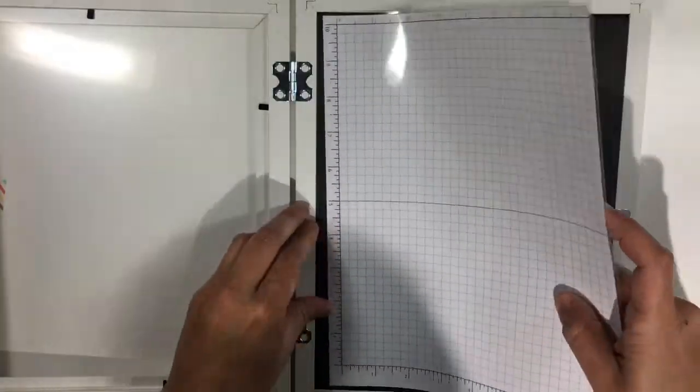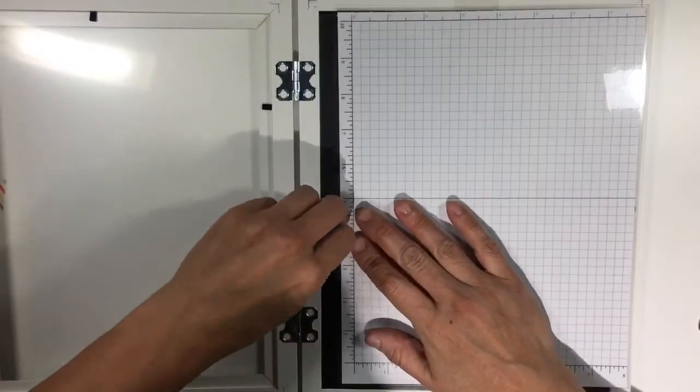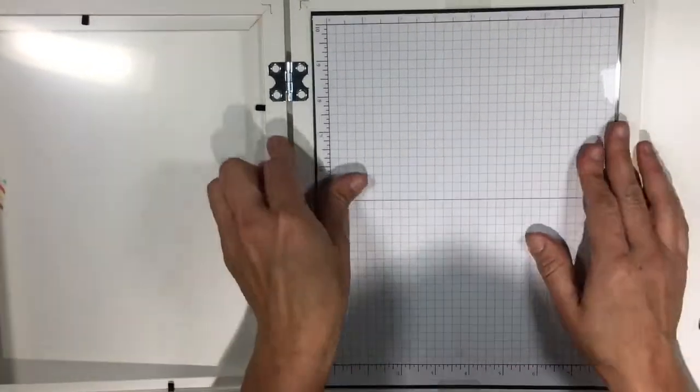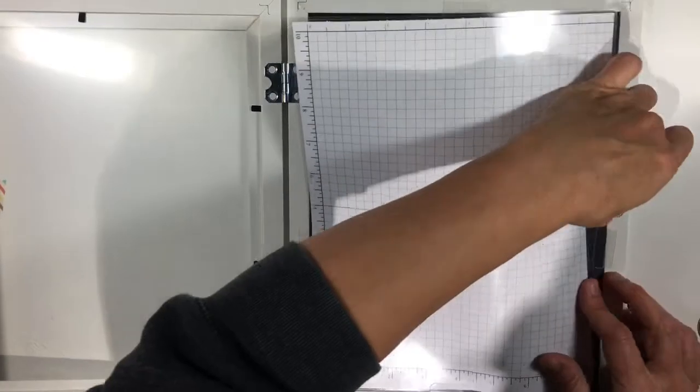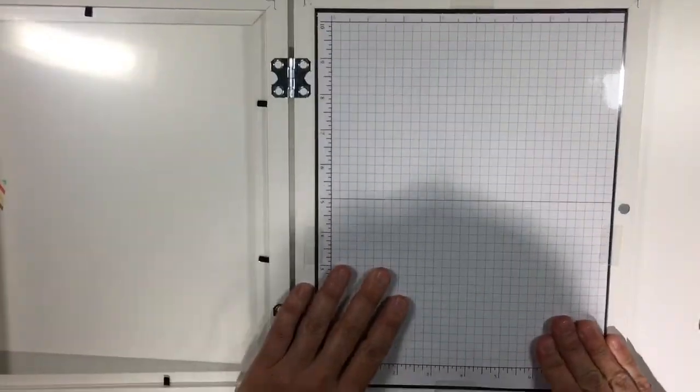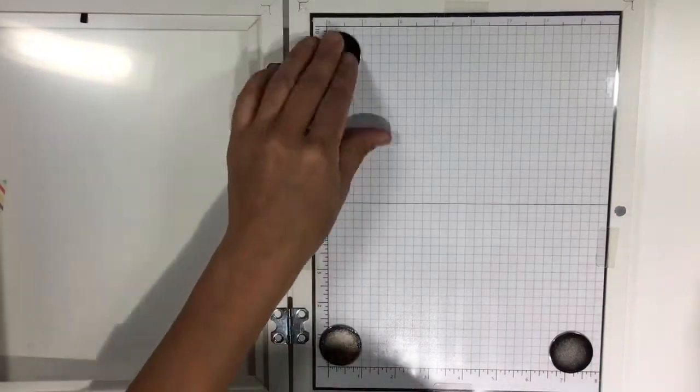Now the second use for this is as a stamp positioner. All you have to do is slide your grid paper in. I laminated mine but you don't have to if you don't have a laminator. If you do have access to a laminator it is convenient to have it laminated because then you can reuse the same sheet repeatedly.